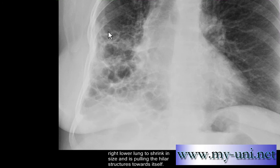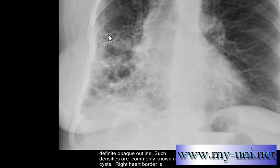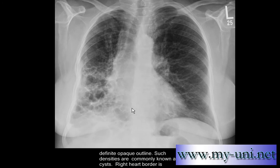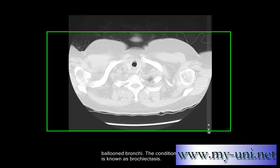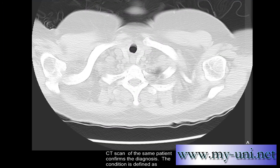Multiple round hazy densities of varying sizes are present, nearly all of them with a definite opaque outline. Such densities are commonly known as cysts. The right heart border is not visible — this is known as loss of silhouette sign. The cysts are nothing but dilated and ballooned bronchi.